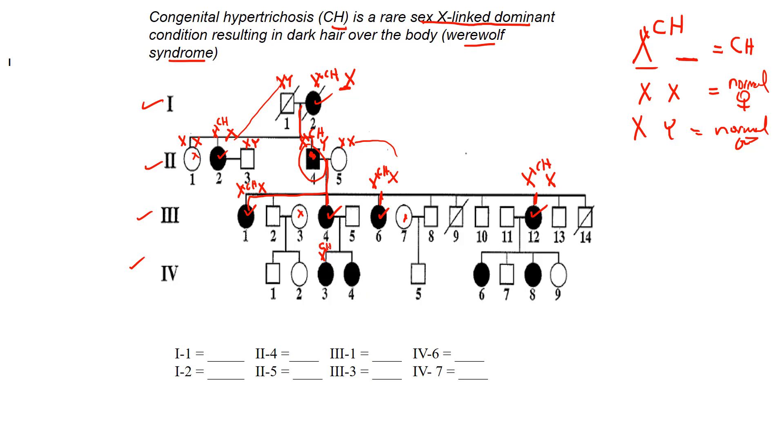we show the dominant allele first. So in this case, CH is dominant. So it has to go first.